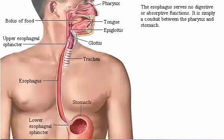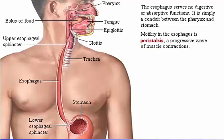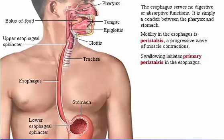The esophagus serves no digestive or absorptive functions; it is simply a conduit between the pharynx and stomach. Motility in the esophagus is peristalsis, a progressive wave of muscle contractions. Throughout the GI tract, movement of the contents is accomplished by creating a pressure gradient as muscle contracts. Swallowing initiates primary peristalsis in the esophagus. Once begun, swallowing is a well-coordinated stereotyped reflex controlled by the swallowing center in the brain stem. Click the esophagus to observe peristalsis.